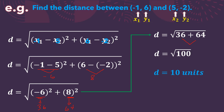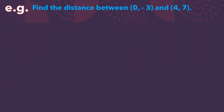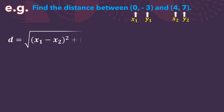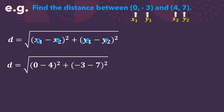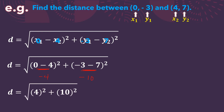Let's have another example. Find the distance between (0, -3) and (4, 7). The first set is considered as x₁ and y₁, and the second set as x₂ and y₂. Using the formula, we substitute: x₁ and x₂ are 0 and 4, while y₁ and y₂ are negative 3 and 7. Rewriting our equation, d equals the square root of (0 minus 4) quantity squared plus (negative 3 minus 7) quantity squared.